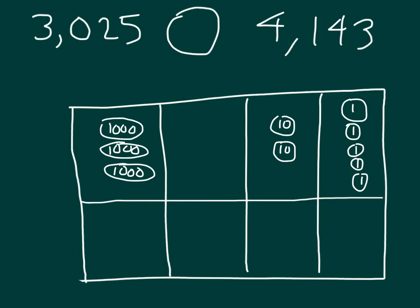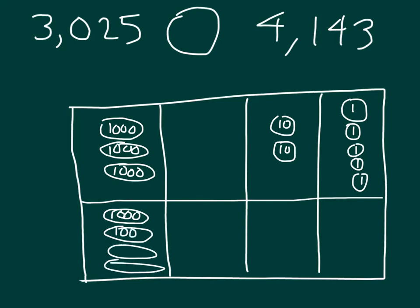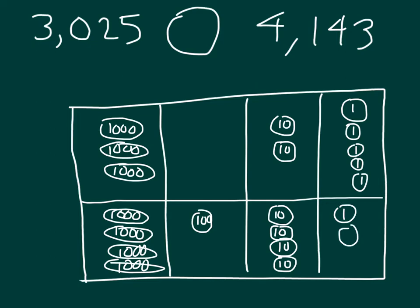I will go ahead and model the other number, 4,143. How many thousands will we need? Right, we'll need four of them. We then have a 1, a 4, and a 3, which we will model into our place value board. As we see, we have 4,000, we have 100, we have four tens, and we have three ones, which is what 4,143 equals.